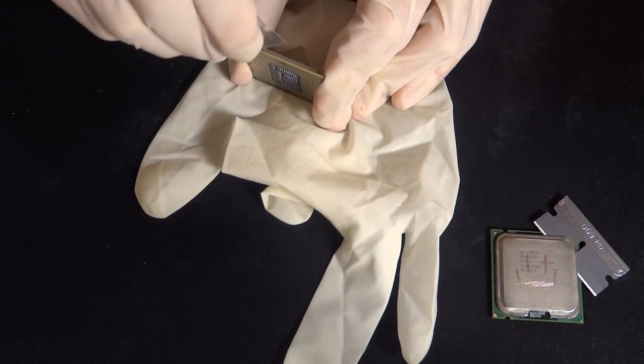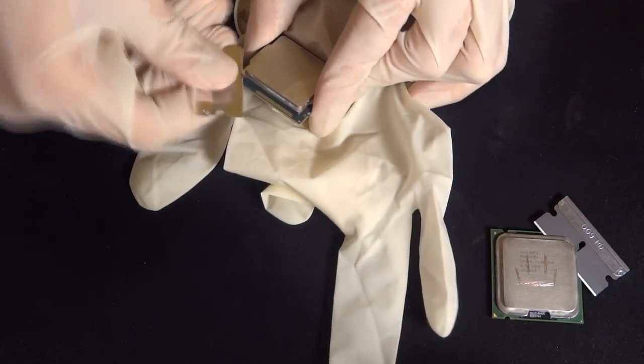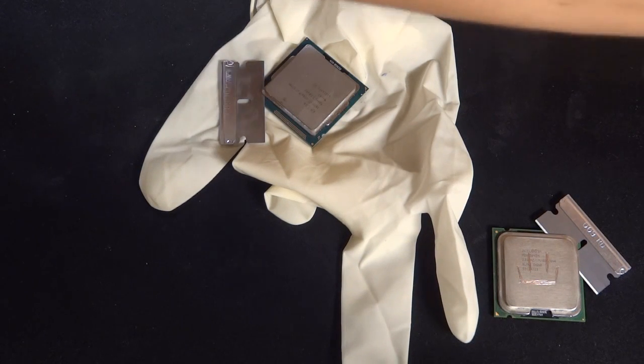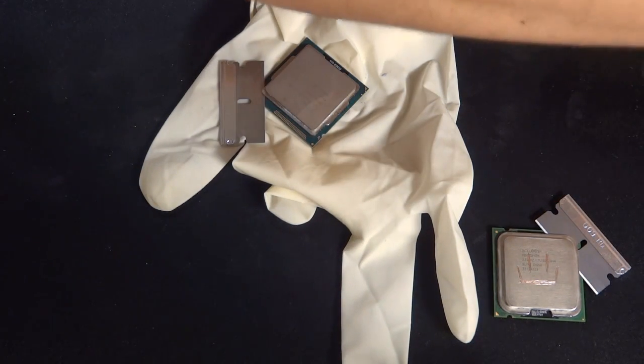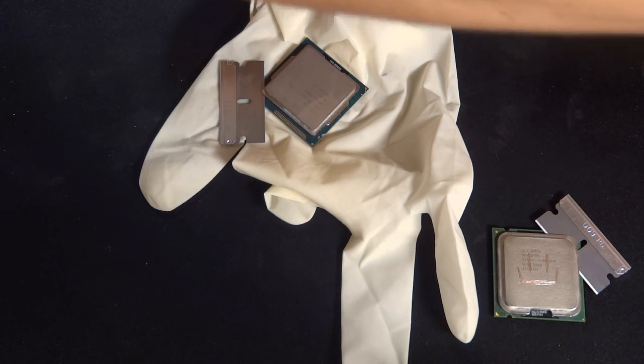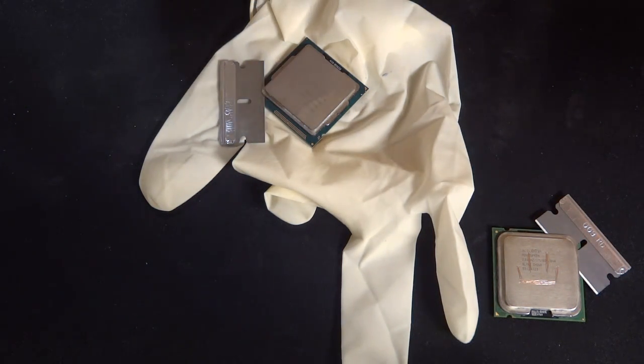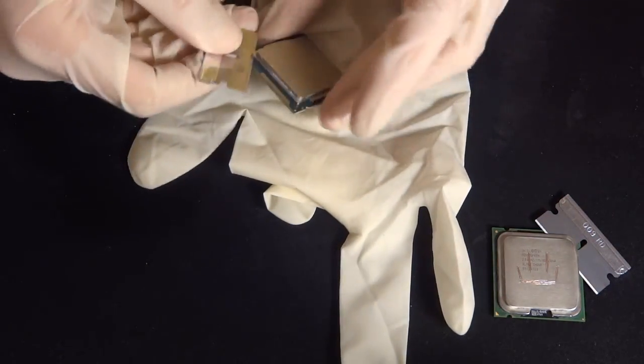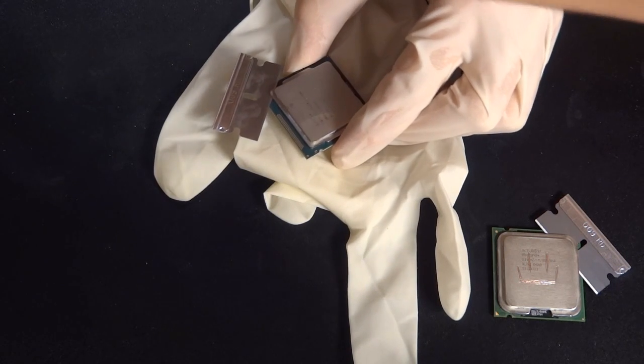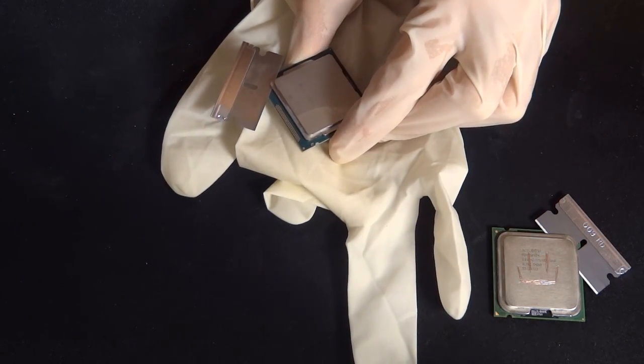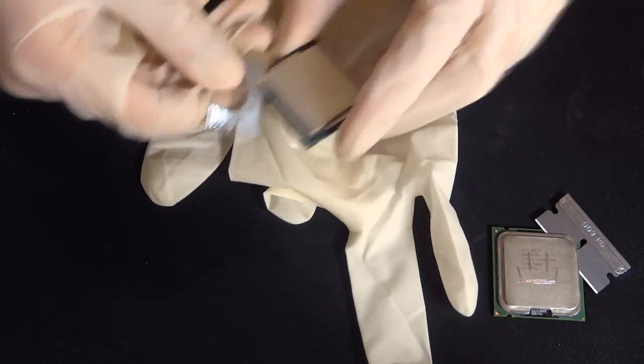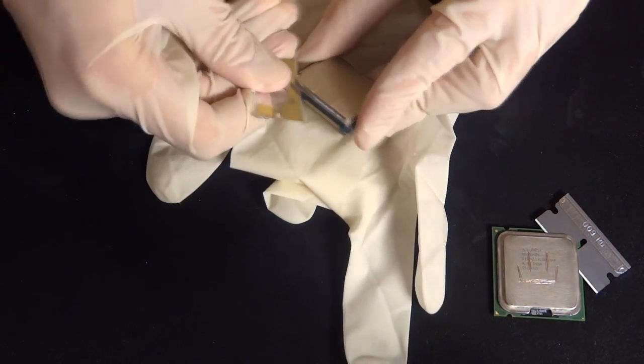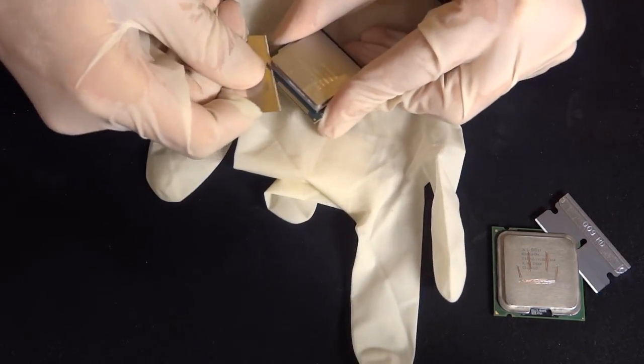After that you want to grip the PCB, the green part again, and put your blade in between the IHS and the PCB. What you want to make sure is that you're doing it very slowly and you're basically wiggling it slowly. As you can see I was kind of confused because it was taking quite a long time, but you just have to wiggle it left and right, back and forth.